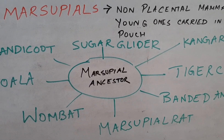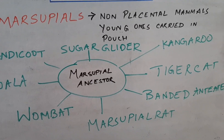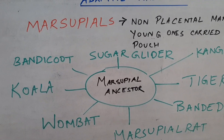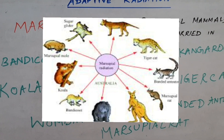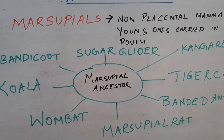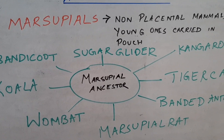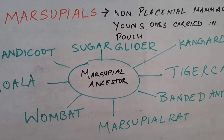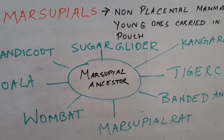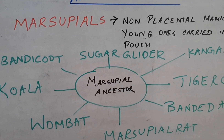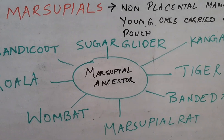In your textbook, nearly 10 types of marsupials are discussed: bandicoot, sugar glider, kangaroo, tiger cat, banded ant eater, marsupial rat, numbat, koala, and various others. From the marsupial ancestor — a mouse-like creature from the Jurassic age — various animals evolved over time, with changes in physiological, anatomical, and morphological structure. In this way, various stocks of animals developed from the ancestral marsupial stock.